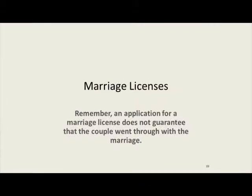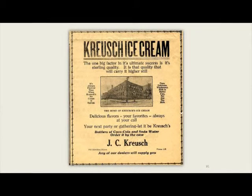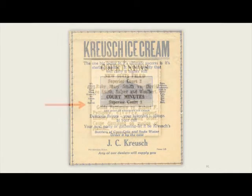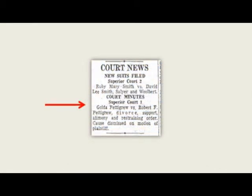Marriage licenses were issued to several couples. One thing to remember: an application for a marriage license does not guarantee the couple went through with the marriage. Other newspaper items: maybe an ad if your family owned a business. Court news — here's a divorce filing: Golda Pettigrew versus Robert F. Pettigrew, divorce, support, alimony, and restraining order — cause dismissed on motion of plaintiff. So they didn't actually go through with it at that point.